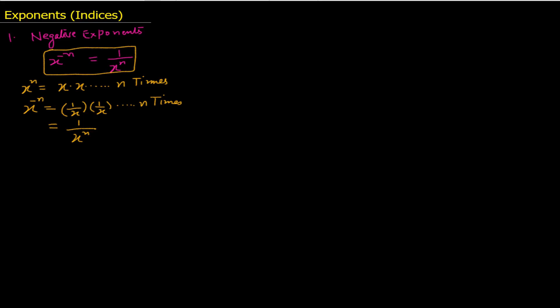Now let us take an example: 7 raised to the power minus 2. This is equal to 1 divided by 7 raised to the power 2, which is equal to 1 divided by 49.